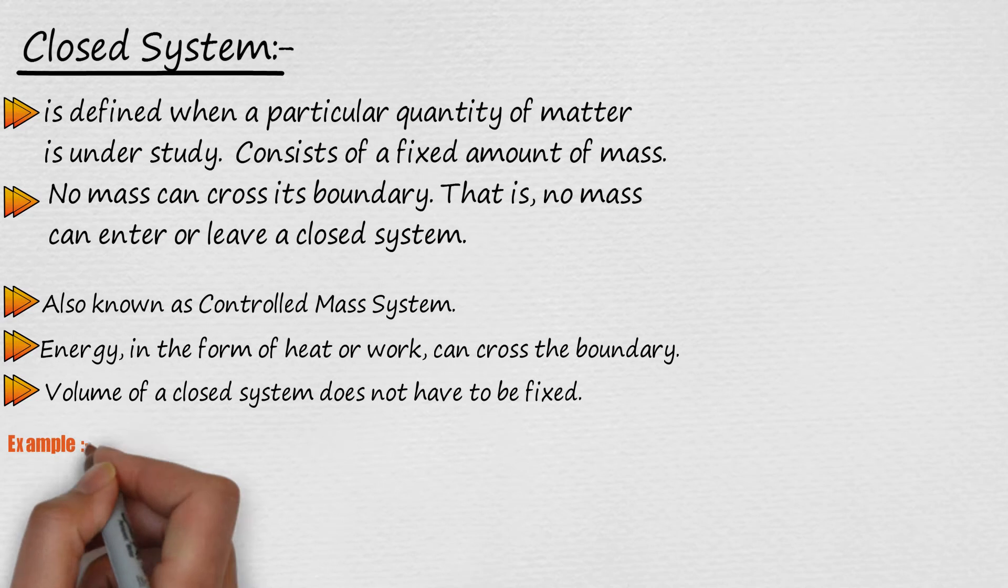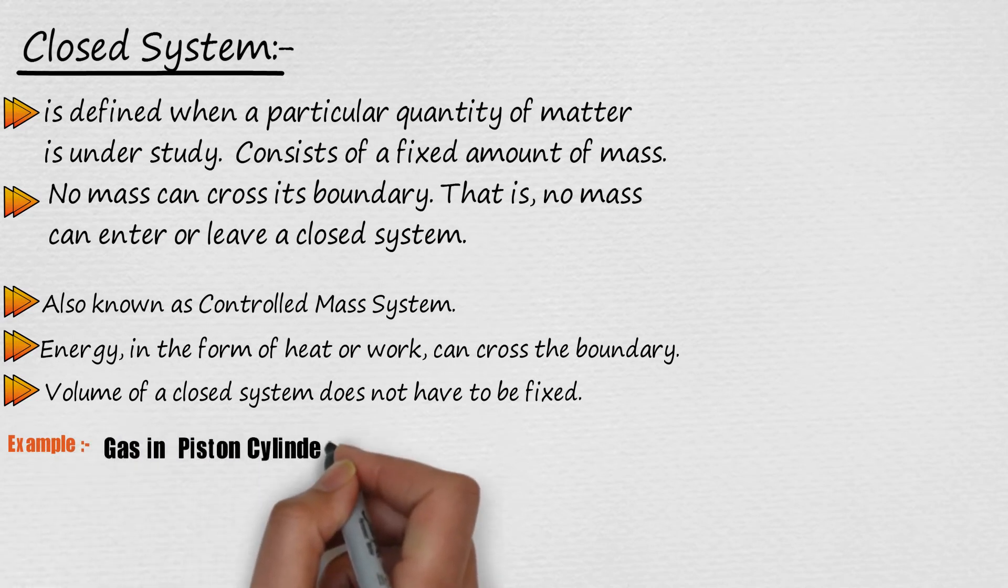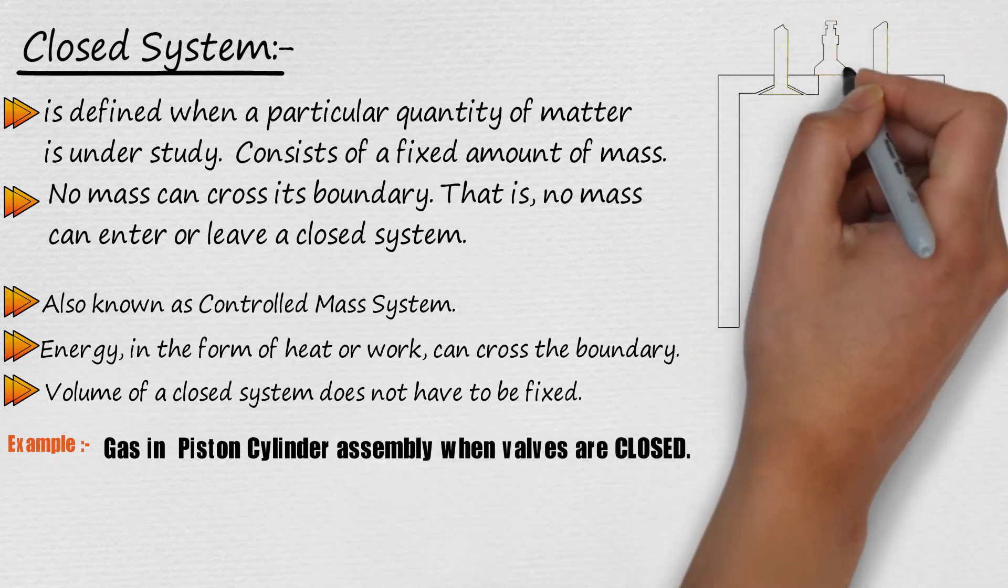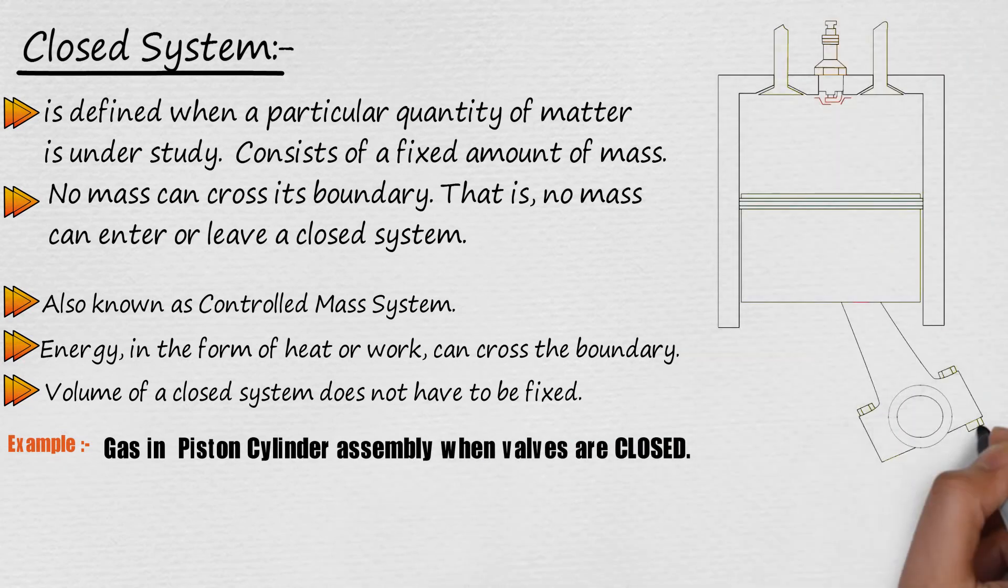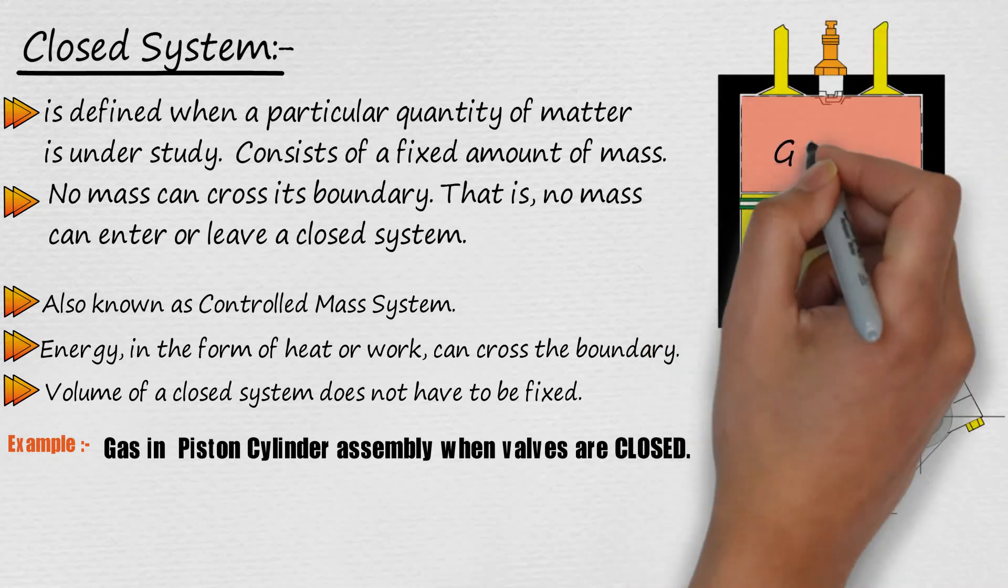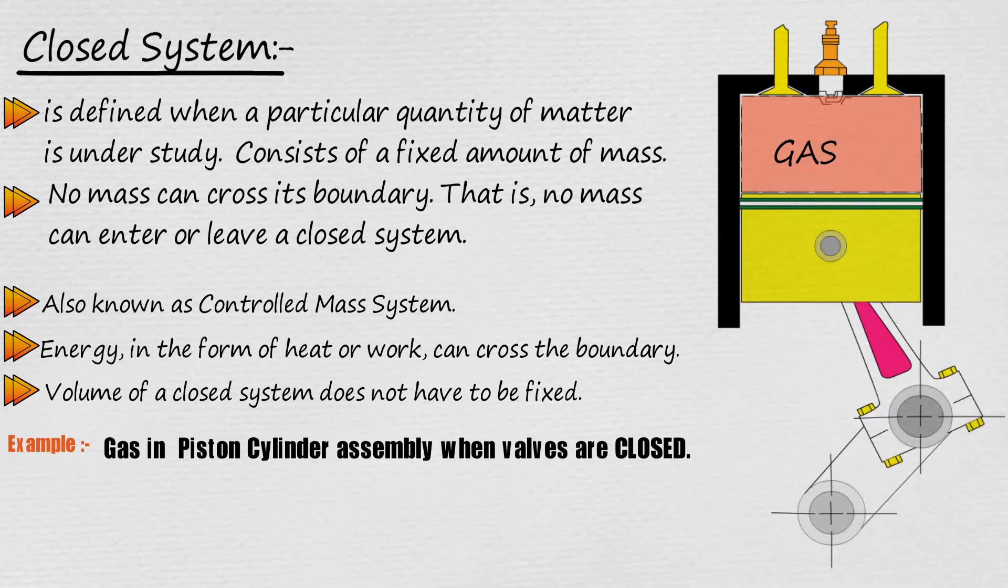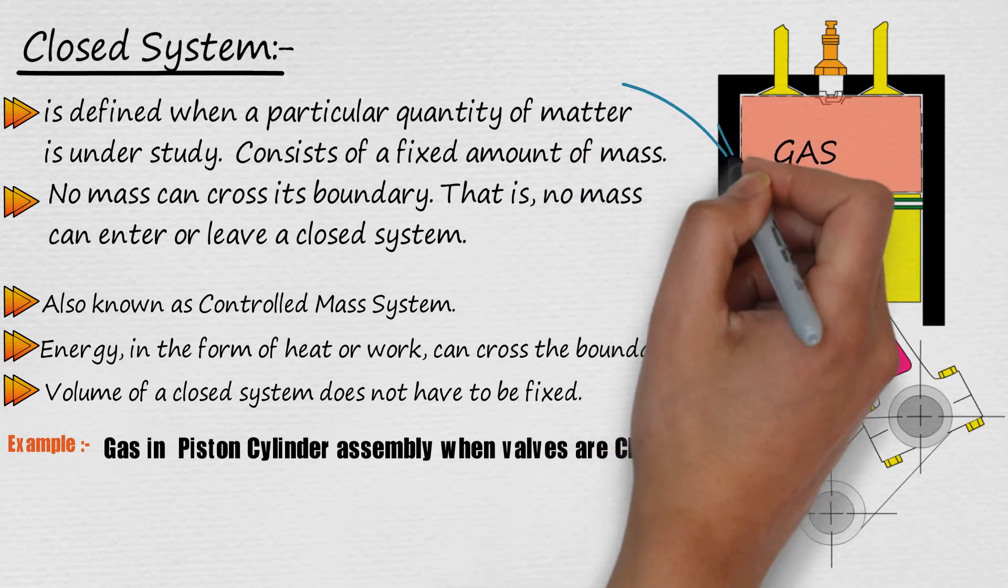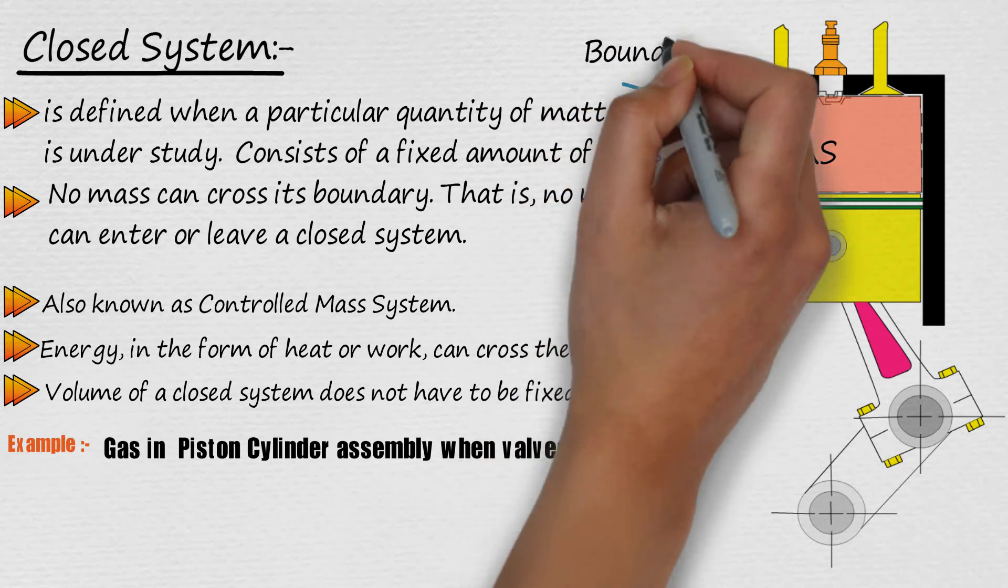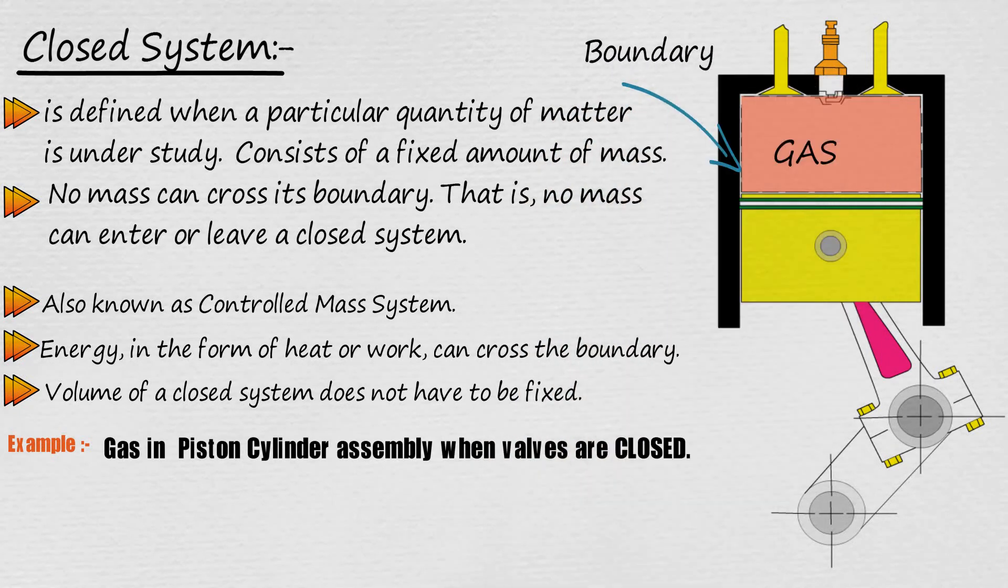Let's see example of closed system. A gas in a piston cylinder assembly, when the valves are closed, we can consider the gas to be a closed system. Here is the closed system of piston cylinder assembly containing gas. The boundary lies just inside the piston and cylinder walls, as shown by the dashed lines on the figure.